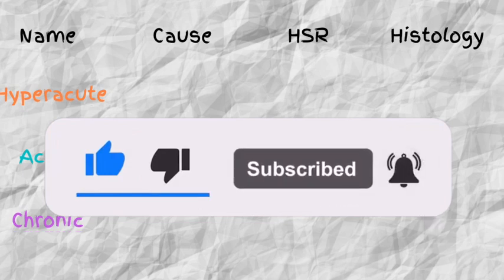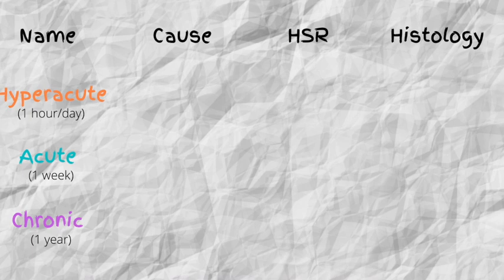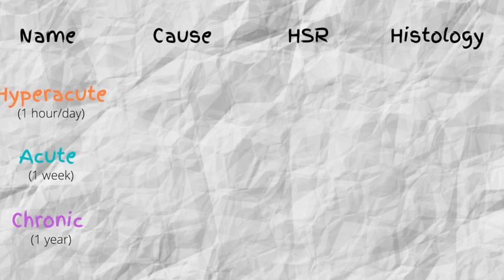I remember the timing by saying: one day, one week, one year. Hyper-acute sounds like something that presents very suddenly — it typically occurs within minutes to hours after receiving a transplant, so you could say one minute or one hour. Acute transplant rejections occur within less than six months, and chronic transplant rejections typically present within months to years after the transplant.